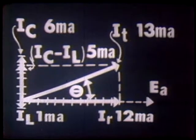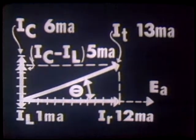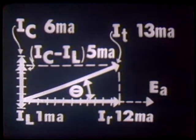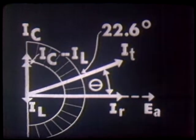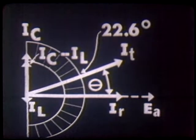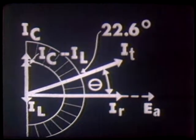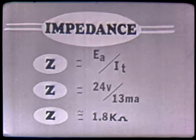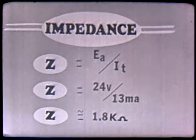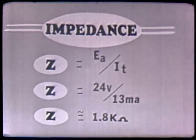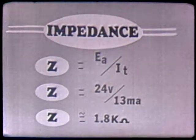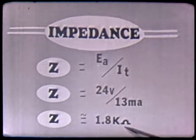We have our phase angle theta generated here. Theta is the angle with which the current leads or lags the applied voltage — here it's leading. Measuring this phase angle with a protractor, it reads 22.6 degrees — plus 22.6 degrees because we have a leading phase angle. Now that we have calculated graphically our total current as 13 milliamps and the phase angle as 22.6 degrees, let's go one step further and find the impedance of our circuit. Using Ohm's law and substituting into the formula, the impedance is approximately 1.8k ohms.